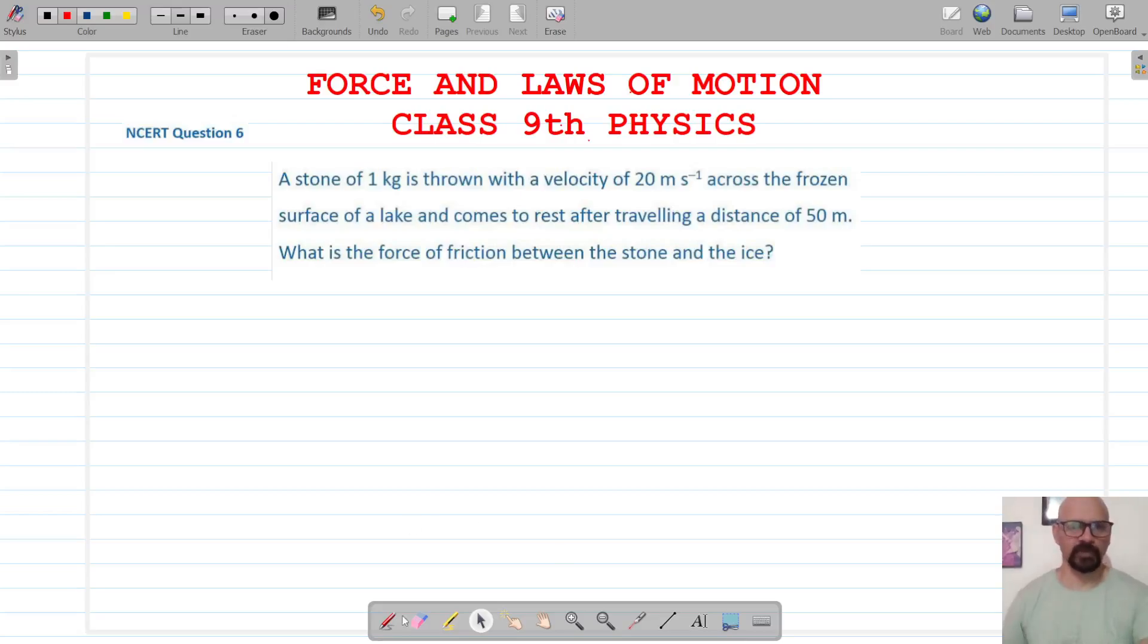Okay, for question number six it's given that a stone of 1 kg is thrown with a velocity of 20 meters per second. So the mass of the stone is 1 kg and the initial velocity is 20 meters per second.